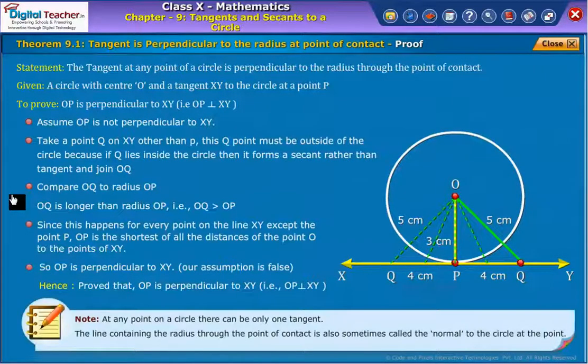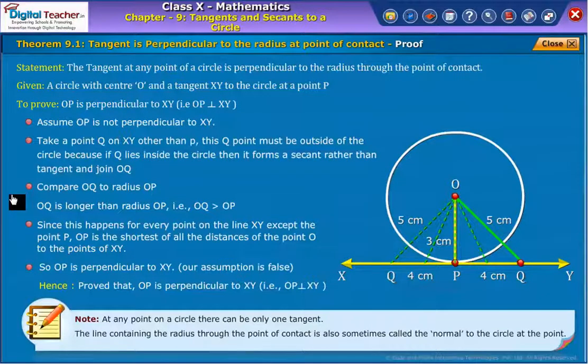Note the observations in this theorem. By this theorem, it is concluded that at any point on a circle, there can be only one tangent. The line containing the radius through the point of contact is also sometimes called the normal to the circle at the point.